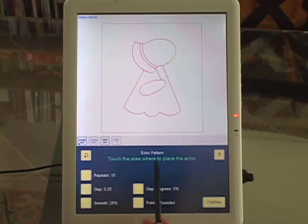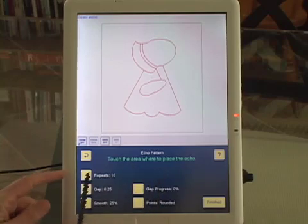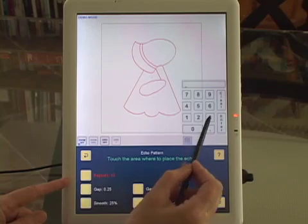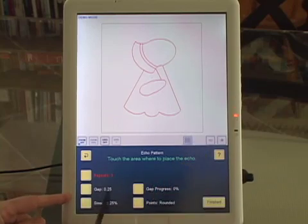Now it says touch the area where to place the echo. I'm not going to do that yet. First of all, I'm going to tell it how many echoes I want and the spacing. I know I won't need ten repeat echoes, so I'm going to reduce that to three, and I'm going to make the gap between the echoes one inch.